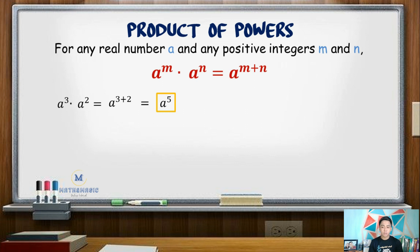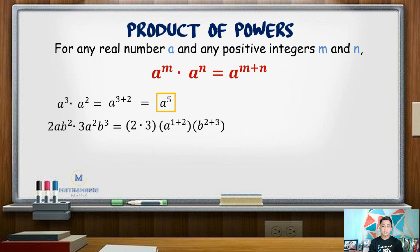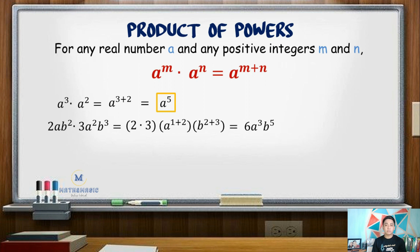Another example: 2ab squared times 3a squared b cubed. We need to first multiply the numerical coefficients 2 and 3, giving us positive 6. Then, for the terms with the same variables, we add the exponents. We have a times a squared — adding 1 and 2 gives us a cubed. b squared times b cubed becomes b raised to 2 plus 3, or b to the 5th power. So the answer is 6a cubed b to the 5th.